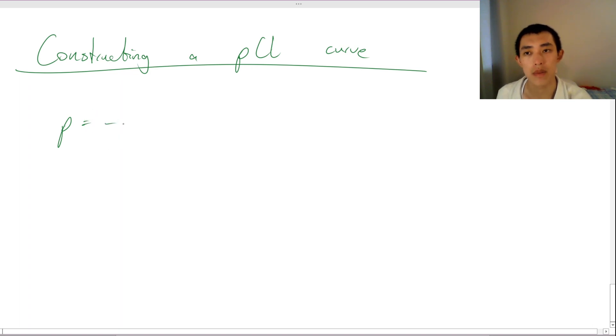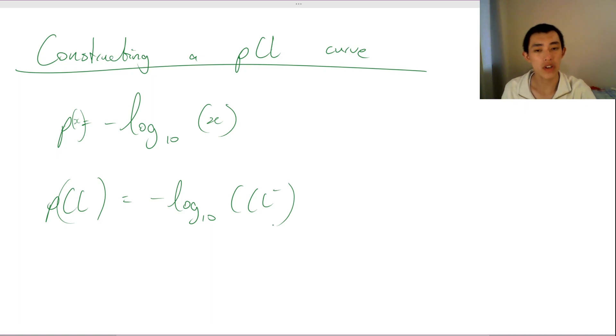It just means the negative log base 10 of something. So P of X means the negative log base 10 of X. So the P of chlorine, you can really imagine this is a function written like this. It's just a negative log base 10 of chlorine. So we can actually construct a pCl curve for our titration. The easiest way to do this is with an example. So let's have a go at constructing the pCl curve for this question.